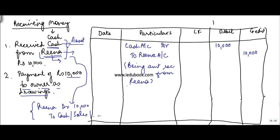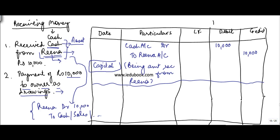The second entry is payment of rupees 10,000 to owner as drawings. We've seen in earlier entries that the promoter can infuse cash into the business. But what happens if he withdraws cash? When a promoter withdraws cash, it is normally called drawings. When he infuses cash, the business credits the capital account.